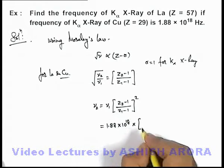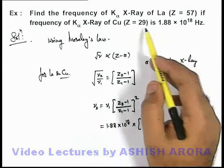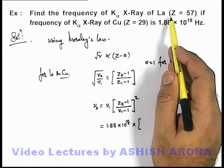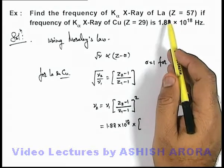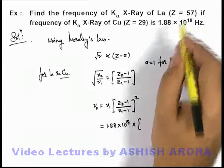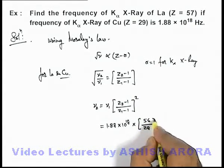multiplied by z 2. We need to take copper as well as lanthanum. So for lanthanum the frequency we are required to find, so z 2 we'll take as 57, so it'll be 56 by 28 whole square.